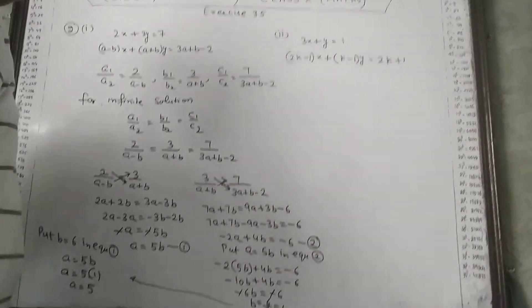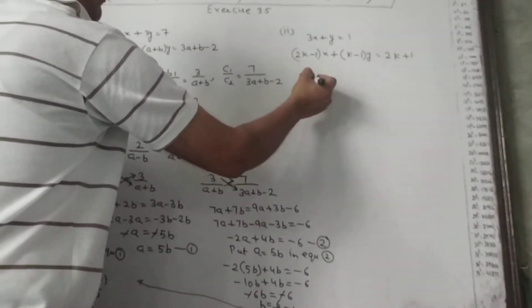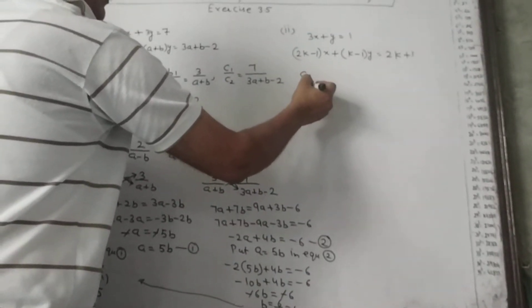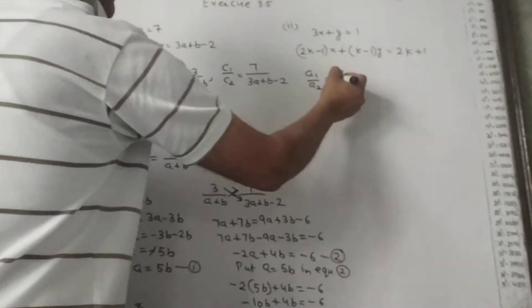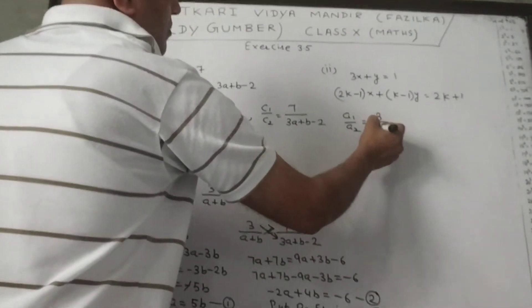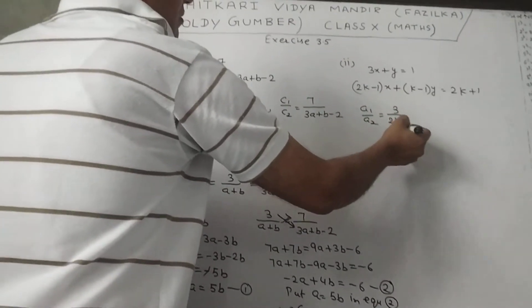For no solution condition, we set up the ratios. a1 upon a2 equal to 3 upon (2k minus 1).